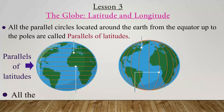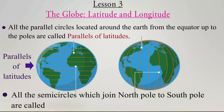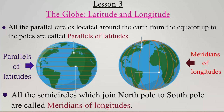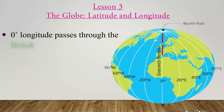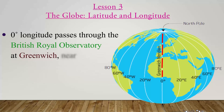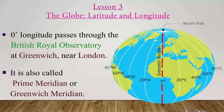All the semicircles which join the North Pole to the South Pole are called meridians of longitudes. Zero degree longitude passes through the British Royal Observatory, which is in Greenwich, London. Zero degree longitude is also called the prime meridian or Greenwich meridian.